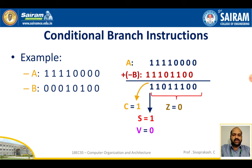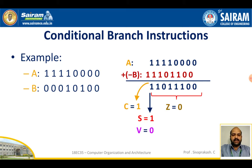The result is 1111100, which is not zero, so the zero flag will not be set. This small example illustrates the conditional branch instruction — when used, all four flag statuses must be set or verified.